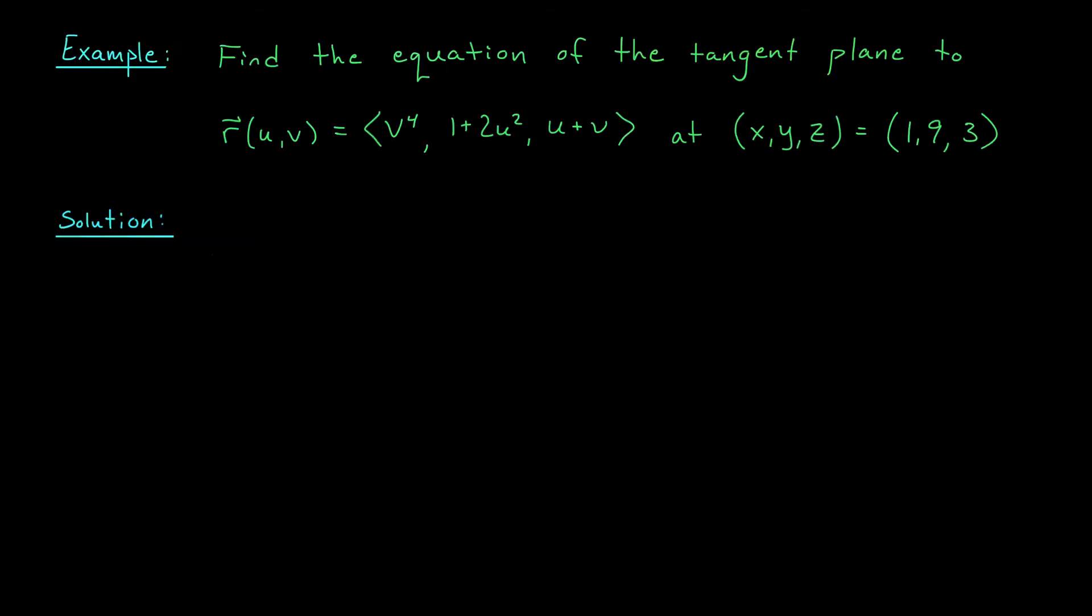Let's take a look at this example together. Here, we're dealing with a parametric surface described by this scary looking equation. We are looking for the equation of the tangent plane to our surface at the point xyz equals 1, 9, 3. To find this equation, we'll need a vector that's normal to our curve at the given point. And fortunately, we learned how to find such a vector on the last slide. We take the cross product of r u and r v, where these vectors are obtained by differentiating our vector function with respect to u and v respectively. So let's first take the derivative with respect to u.